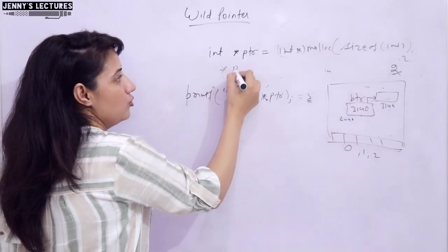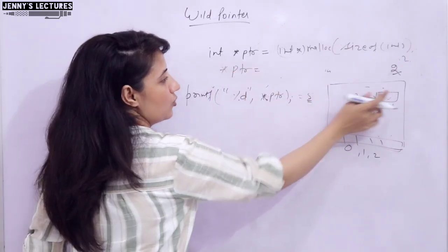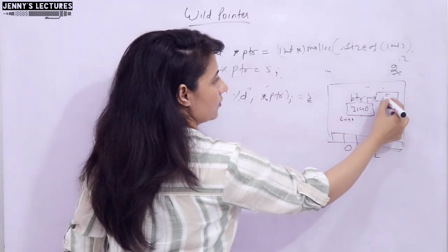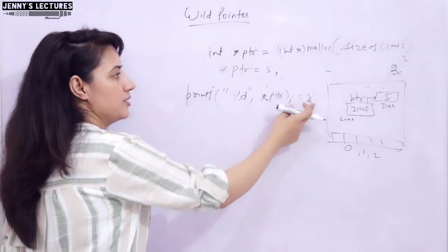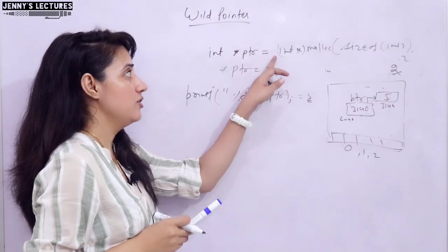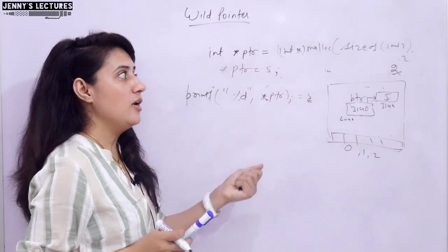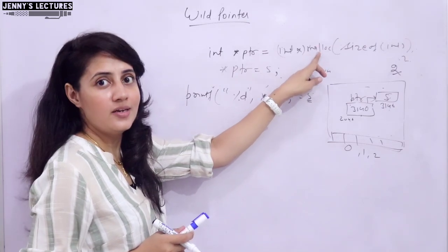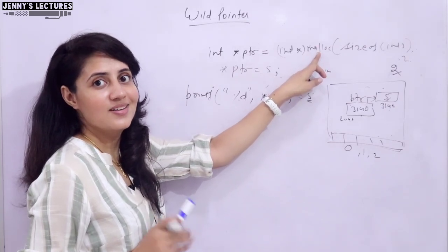We have not taken any variable here, so directly using asterisk PTR you can directly store any value here. If you want to store like 5, you can store here 5. And if you want to access, if you access it will print 5. So here it is no more a wild pointer or uninitialized pointer, assuming that malloc will work fine, it will not return null.